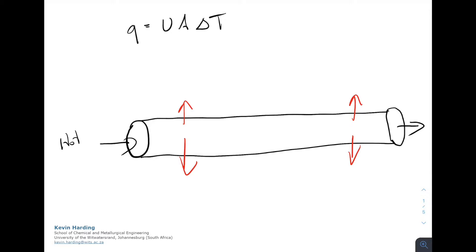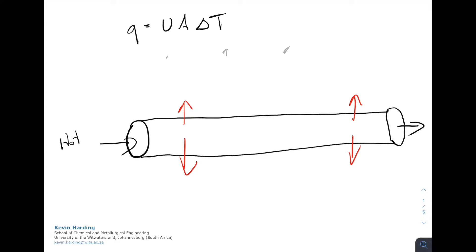If we look at the heat transfer equation and want to increase q, that means we need to increase U, increase A, or increase ΔT. Looking at U first: U includes k from conductive heat transfer and h from convection. To increase U, we want k to be as high as possible, so we want metals — not ceramics, not insulators — we want something that will encourage heat transfer.